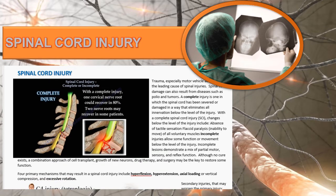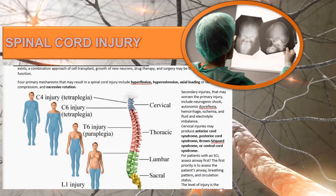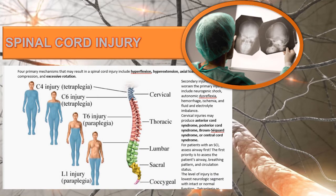The four mechanisms that cause trauma to the spinal cord include hyperreflexion, hyperflexion, hyperextension, and axial loading or excessive rotation. Patients are classified as tetraplegic or paraplegic based on injury level — for example, C4 tetraplegia, C6 tetraplegia with some shoulder function, T6, and L1 paraplegia. Secondary injuries may worsen the primary injury; the nurse watches for neurogenic shock, autonomic dysreflexia, hemorrhage, ischemia, and fluid and electrolyte imbalances.